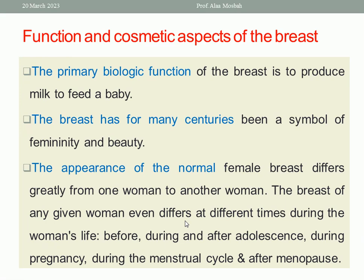You should know that the breast carries clinical significance because a number of clinical disorders can occur, such as mastalgia, mastitis, breast abscess, fat necrosis, fibroadenosis — which is a common disorder of the breast — and most importantly, breast cancer. That is why we need to know the anatomy of the breast, blood supply, lymphatic drainage, and everything about the breast. We should also differentiate benign lesions from malignant ones. Benign lesions are usually found in the upper outer quadrant of the breast.